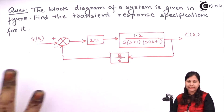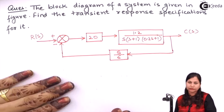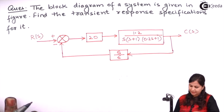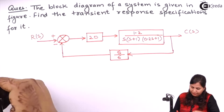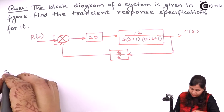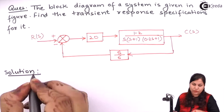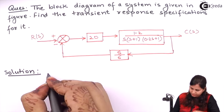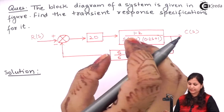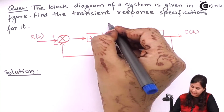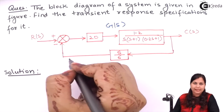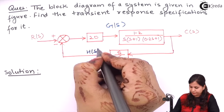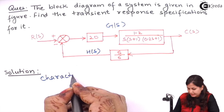In the question we are given the block diagram of a system and we have to find out the transient response specifications — we have to calculate the time response analysis of this system. First, let's find out the characteristic equation. We are given G(s), the forward path transfer function, also called the open loop transfer function, and H(s), the feedback path transfer function or feedback path gain.